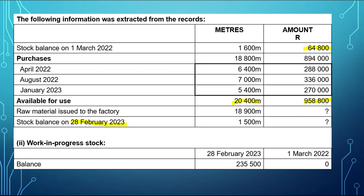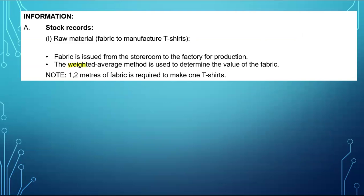To produce T-shirts, we've got fabric worth 20,400 meters, and the value of those 20,400 meters of fabric is R958,800. But was all the fabric used for production? According to the information, 1,500 meters of fabric was not used. We don't know the value of those unused units, so we have to determine it. The weighted average method will be used to calculate the value of closing stock.